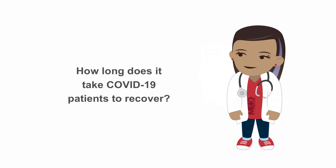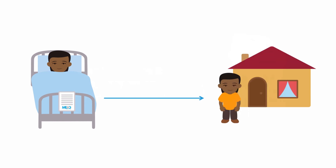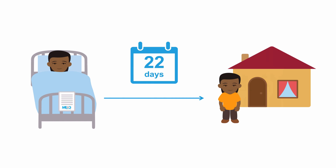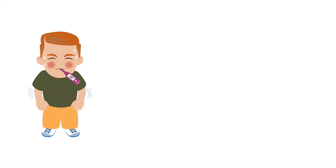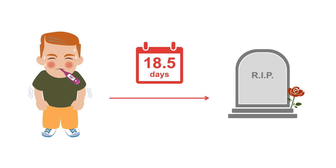One study of hospitalized patients in Wuhan showed that the median duration from symptom onset to discharge from the hospital was 22 days, and the median time from symptom onset to death was 18.5 days.